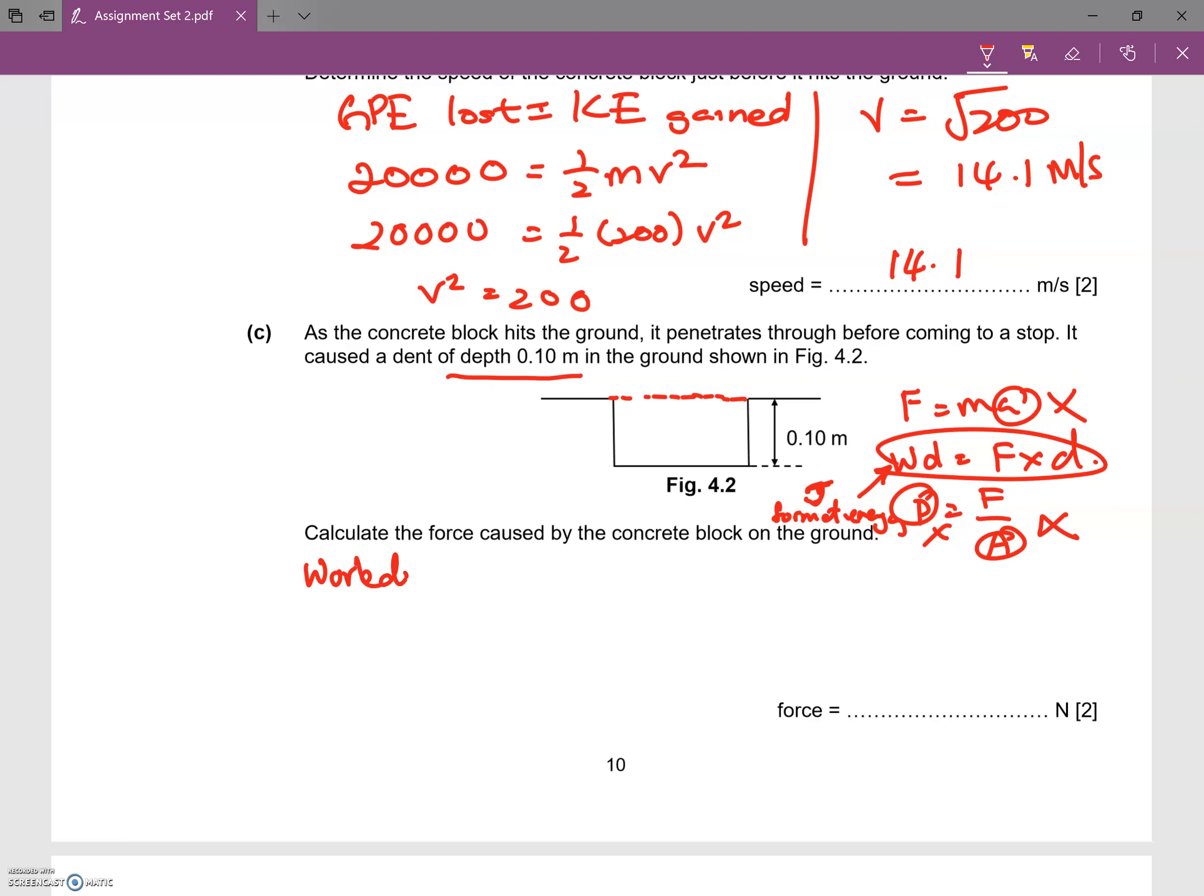Work done would also equal the total KE loss because it has come to a stop. The total KE loss is actually 20,000, which will also equal force multiplied by distance. So what we're going to have is 20,000 equals the force multiplied by 0.10 meters.